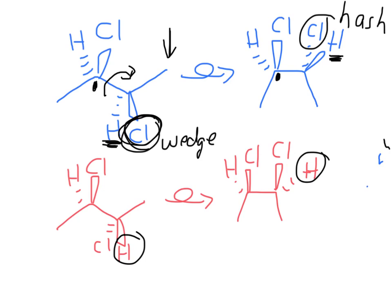Starting off — after I do the bond flip, the chlorine on the left carbon that was wedged stays wedged. We do not change anything about the configuration of the left carbon. Keep one thing fixed, only change on the second carbon.